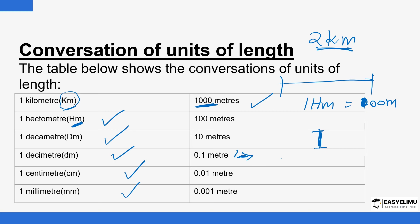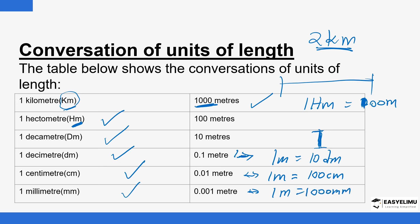From this we can conclude: one meter equals 10 decimeters — 'd' here stands for deci. If you multiply both sides by 10, one meter equals 100 centimeters. If you multiply both sides by 1000, one meter equals 1000 millimeters. So those are the other units of measuring length, and you can be asked to convert between them.